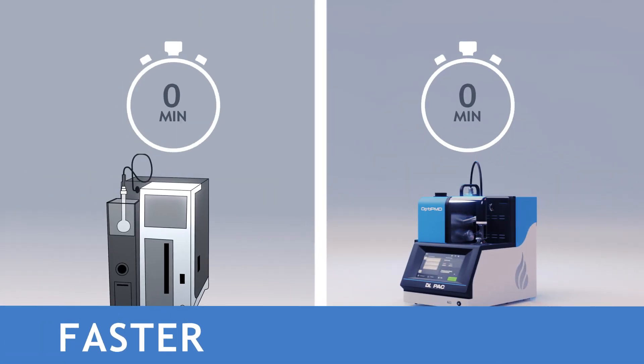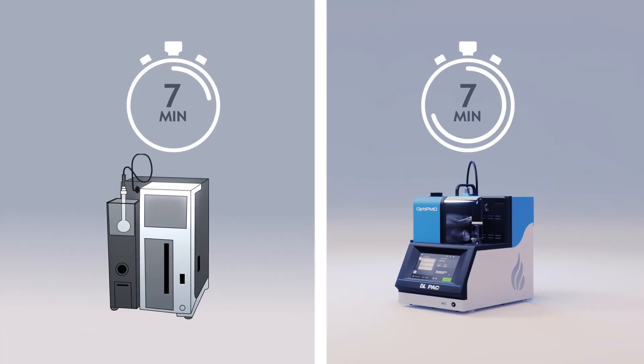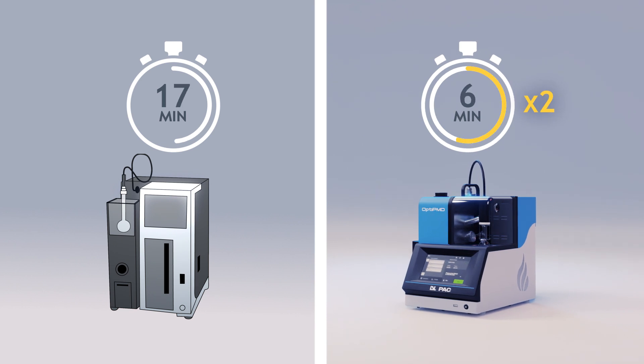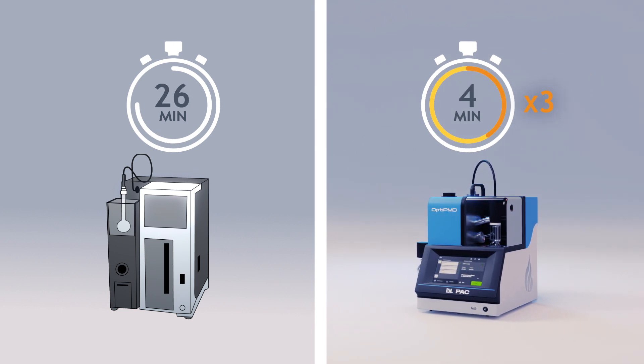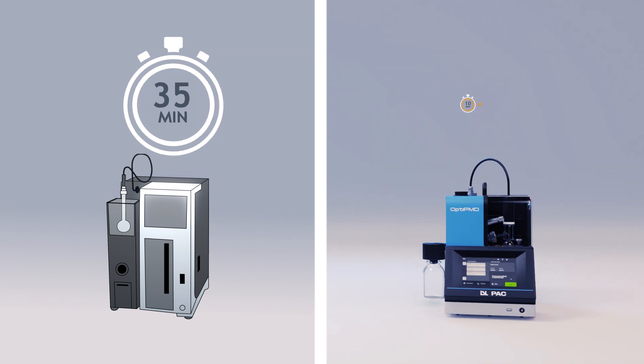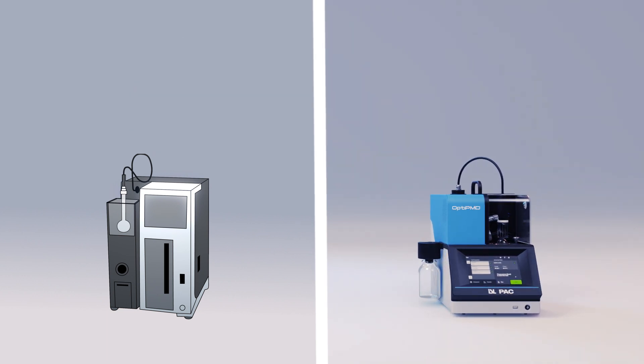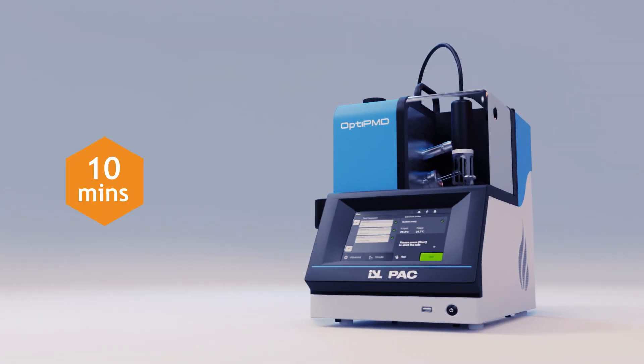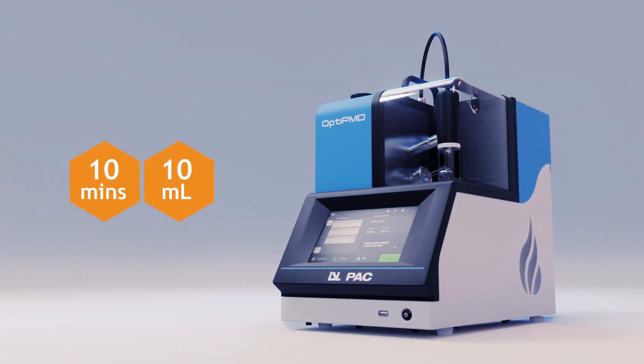OptiPMD is the fastest way to perform a distillation of petroleum products. Our analyzer saves between 25 to 35 minutes per distillation compared to D86 analyzers. OptiPMD performs a physical atmospheric distillation in just 10 minutes, using only 10 milliliters of sample.